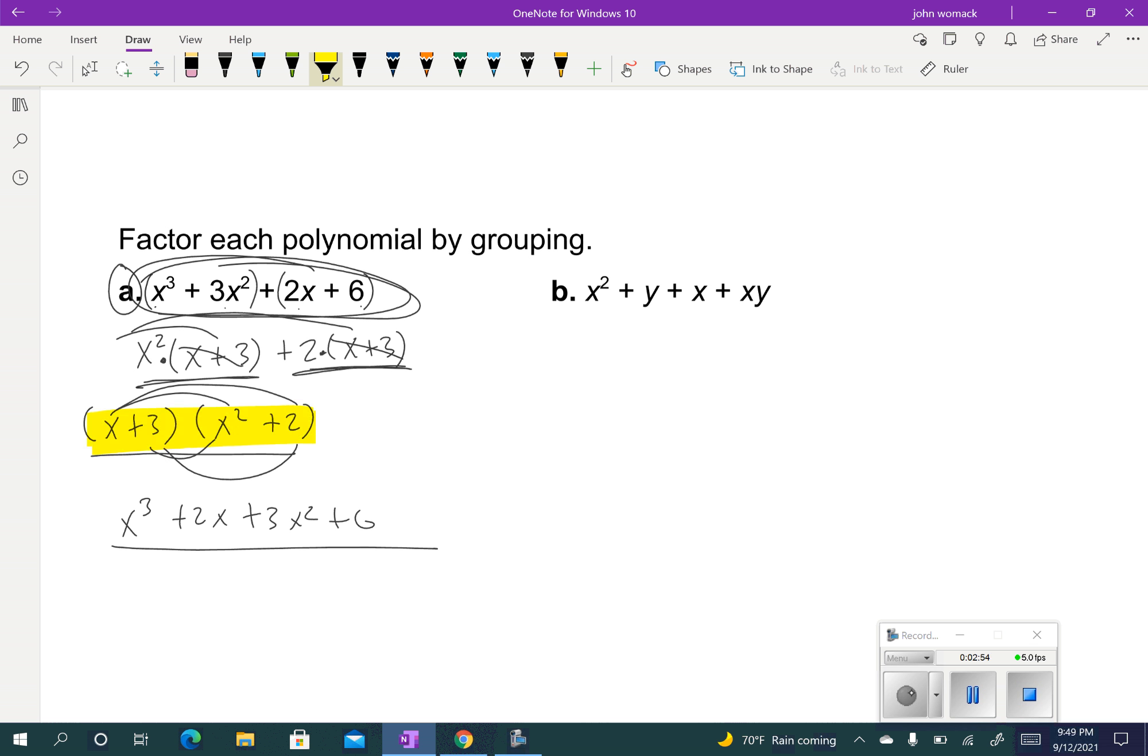Usually if we get mixed up, it's with this step right here where we're taking the x plus 3 out of both of them. Sometimes we have a hard time recognizing that. But it's just like a common factor. Here's an example. If I had x squared y plus 2y, if I take the common factor of y out, it'd leave me with x squared plus 2. This is really what we just did right here. But instead of taking a y out, we took this x plus 3 out and this x plus 3 out.